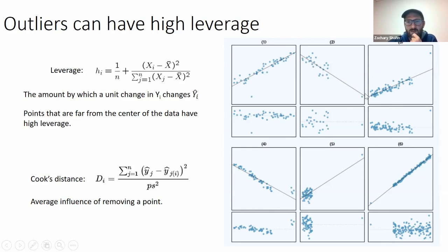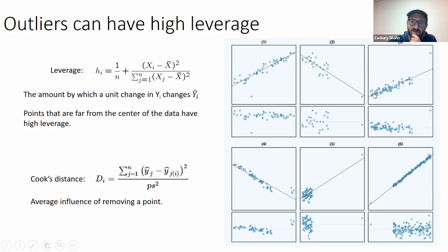Even if this point weren't here, the line would have gone close to it, and the residuals look pretty random for the other points. Here's an example where an outlier is far away from the other points on the x-axis and also has a big residual — it's far on the y-axis from where you'd expect it given the line through the other points. This type of point really does pull the line towards itself. There's a pattern in the residuals where they tend to be above zero in one region and below zero in another, because it has tilted the line up towards itself. The general principle is that points far away from the center of the predictor variables have more leverage — the longer the lever, the more leverage you have.